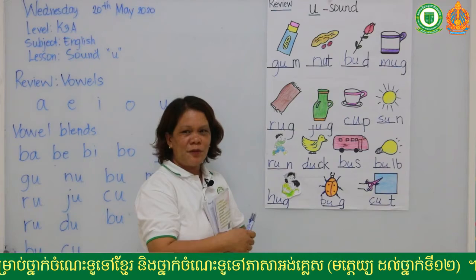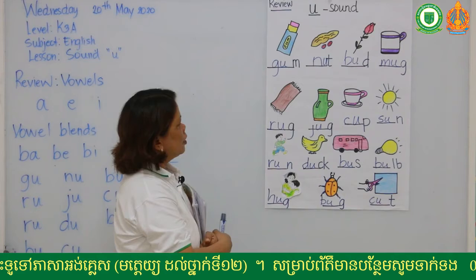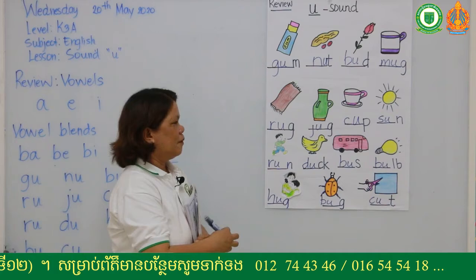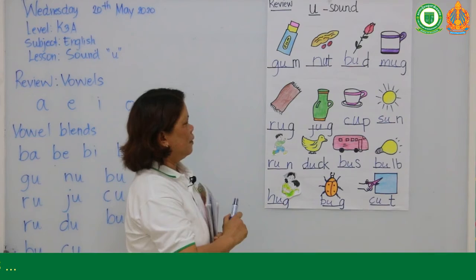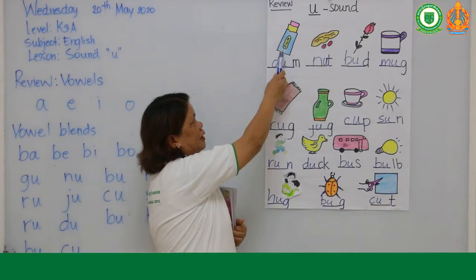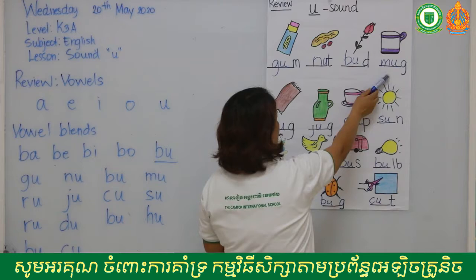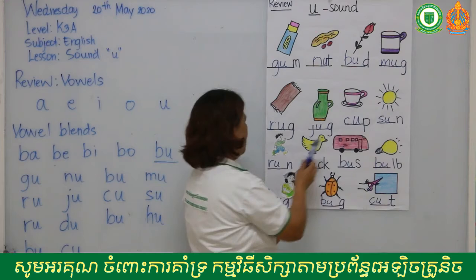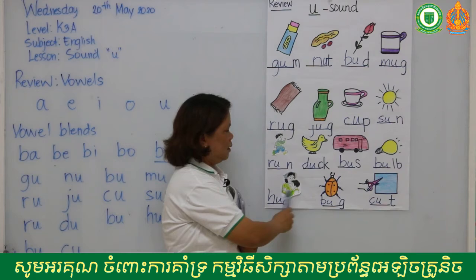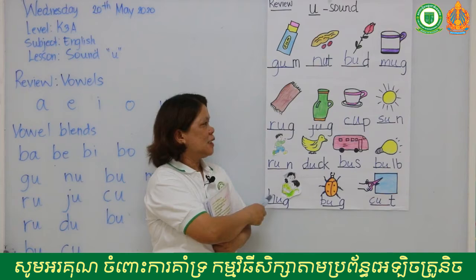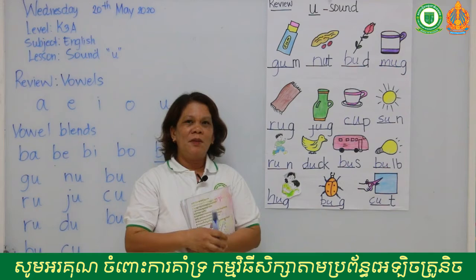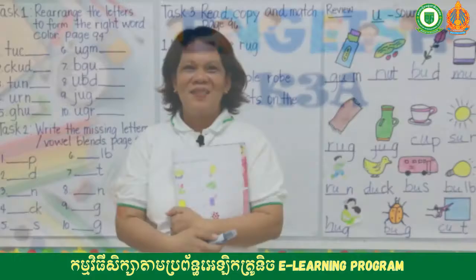Okay, so again be familiar with these pictures because you're going to answer task one, task two, and task three related to these pictures. You should master the spelling of these pictures. We have done a lot of words already from the beginning — we had done sound 'ah' and now we are on sound 'uh.' This picture is: gum, knot, bud, mug, rug, son, run, dog, bus, bug, hug, cut. I'll give you a few minutes to go over these pictures. Please master the spelling — I'll be right back after a few minutes for your task number 1, task number 2, and task number 3.